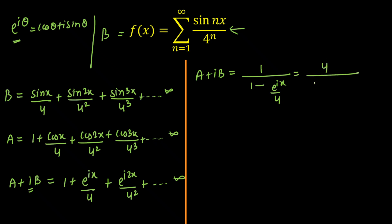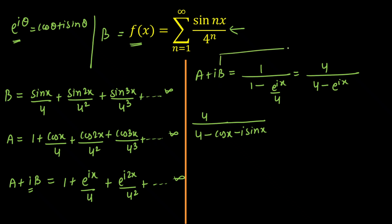Simplifying further, we get this as 4 upon 4 minus e^(ix). Now this can be further written as 4 upon 4 minus, and I'm going to expand e^(ix) using Euler's formula as cos(x) minus iota sin(x). To simplify 4/(4 − cos(x) + i·sin(x)), I'm going to multiply and divide by 4 minus cos(x) plus iota sin(x).